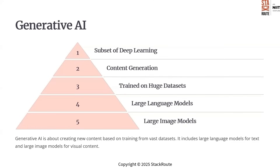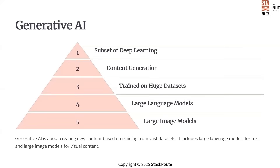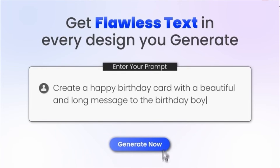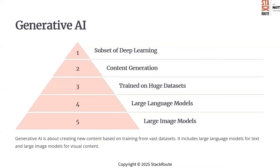Similarly, generative AI models are trained on massive datasets like text, images or code and can generate new content based on that training. For example, large language models can write essays, answer questions or even create code. Large image models can generate stunning visuals or videos from simple text prompts. So generative AI is revolutionizing creativity and problem solving across industries.